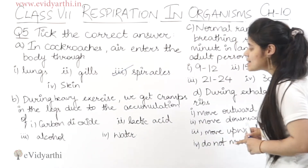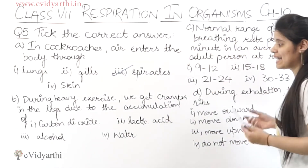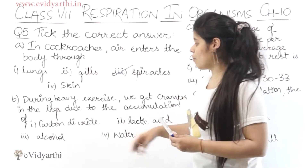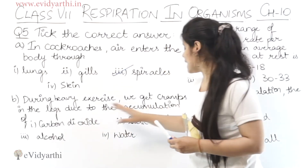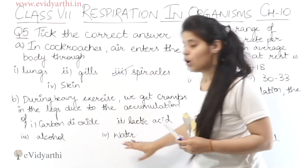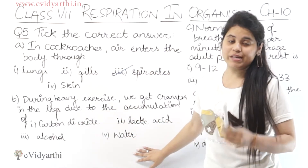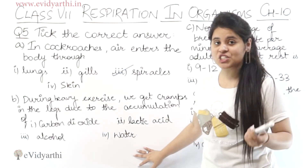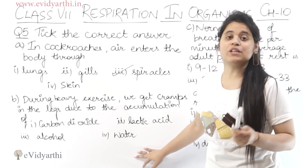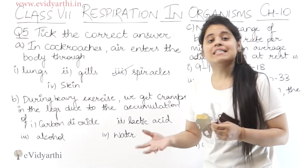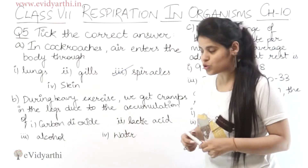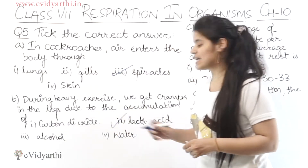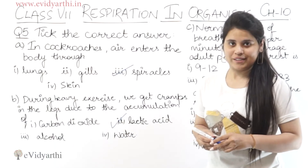During heavy exercise, we get cramps in the legs due to accumulation of — carbon dioxide, lactic acid, alcohol, or water. Exercise करते हुए जब हम anaerobic respiration का use करते हैं, तो as a result lactic acid produce होता है। उसी के accumulation से हमें cramps feel होते हैं।